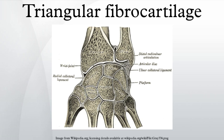With negative ulnar variance, the load across the TFCC is decreased. This occurs during supination, because the radius moves distally on the ulna and creates a negative ulnar variance. With positive ulnar variance it is reversed: the load transmitted across the TFCC is increased. This positive ulnar variance occurs during pronation.